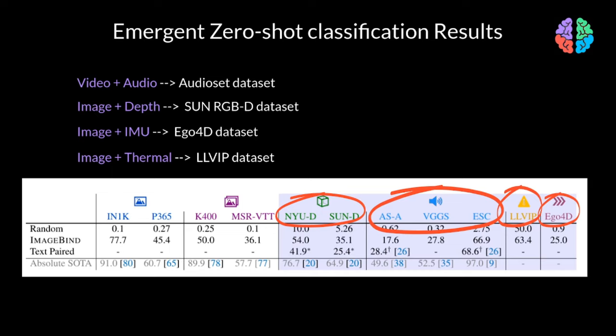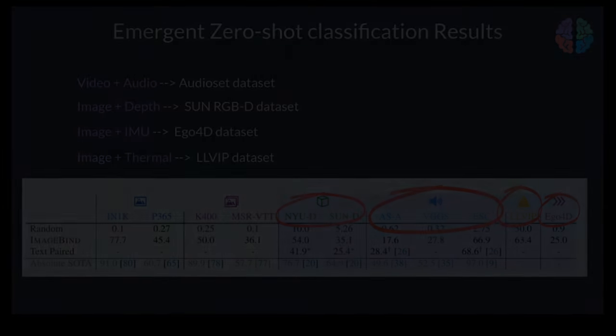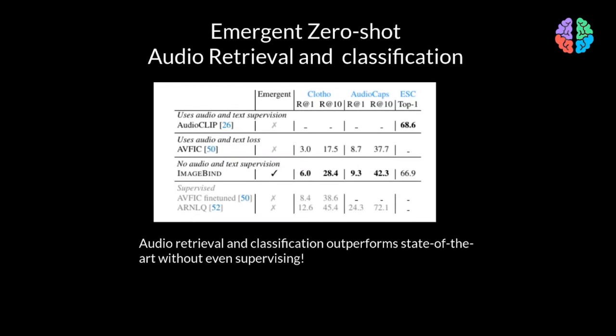You can notice that these datasets are aligned with images, but the results are shown for text prompts as input — so somehow, the alignment between text and other modalities has emerged. Because ImageBind is so novel, there's no real baseline to compare against. They've also shown that they're able to perform audio retrieval and classification without even training or fine-tuning with any audio data. This is the only emergent approach, and everything else is trained on specific audio data by some means.